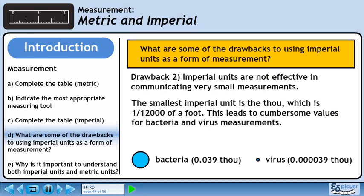The smallest imperial unit is called a thou, which is 1 twelve-thousandth of a foot. This leads to cumbersome values for bacteria and virus measurements.